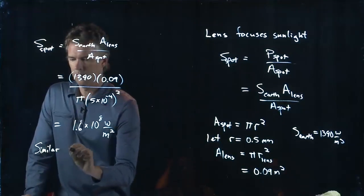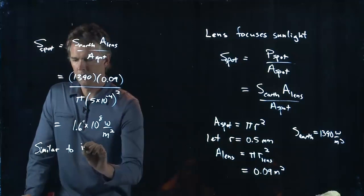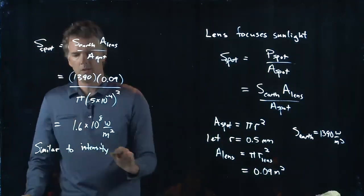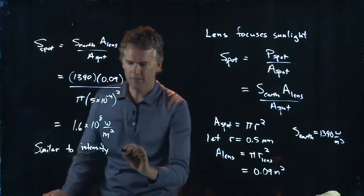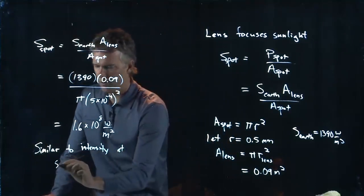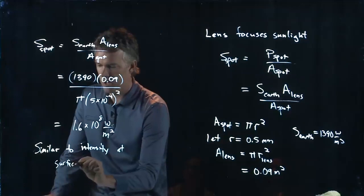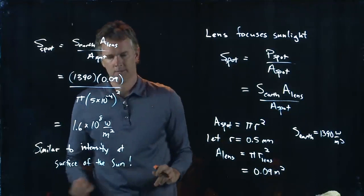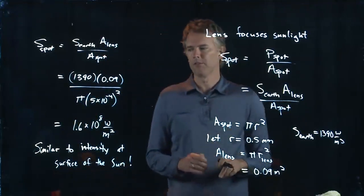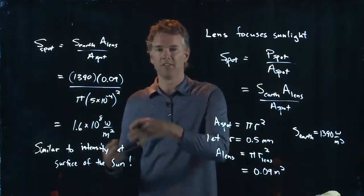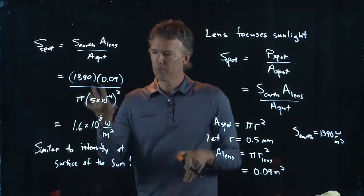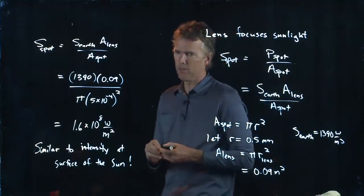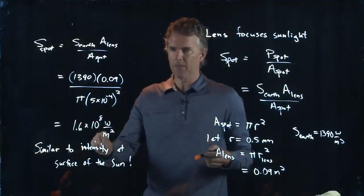How intense is this? It's similar, so in fact a little bit bigger, but comparable to the intensity at the surface of the sun. Remember the surface of the sun, we got something like 6 times 10 to the 7. And now we've got something 10 to the 8, so it's extremely comparable, in fact a little bit bigger than the intensity at the surface of the sun.